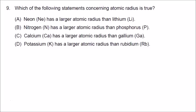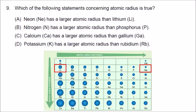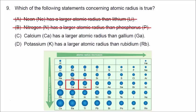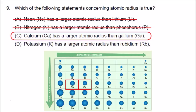Number nine is about atomic radius. There are two trends: the horizontal trend says atoms get smaller as you move from left to right across a period — so lithium is larger than neon, making choice A incorrect. The vertical trend says size increases from top to bottom down a group — so phosphorus is larger than nitrogen, making choice B incorrect. Calcium and gallium are in the same period; since calcium is further left, it has a larger atomic radius. Correct answer is C.